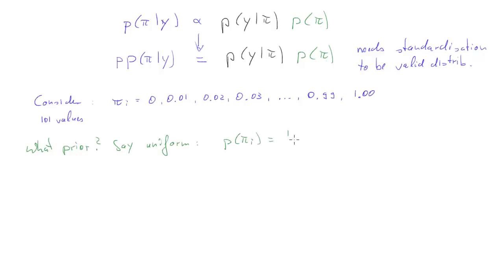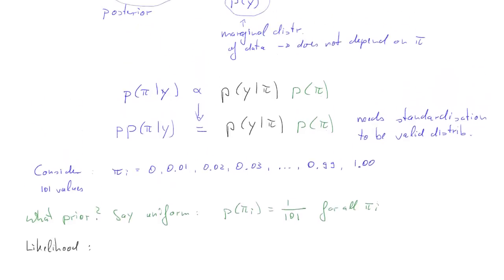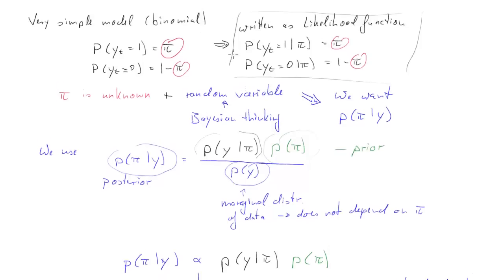What prior do we use? Let's say we use the uniform prior. That means the probability for each of these values is 1 over 101. It's an uninformative prior.